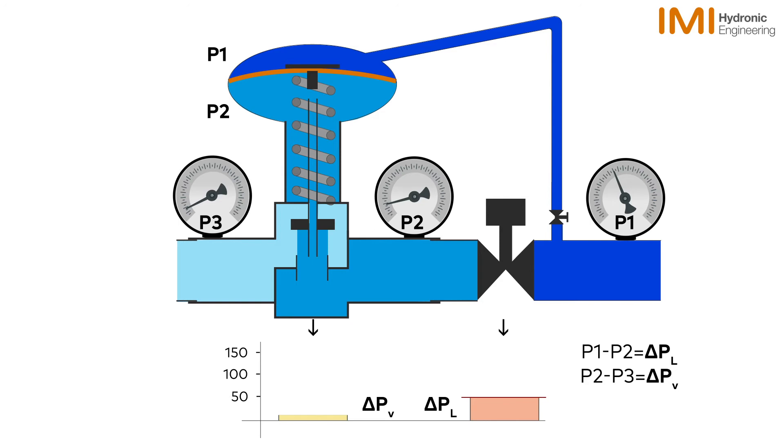As P1 increases, delta PL will initially increase proportionally. The valve then sees this change and acts to close down proportionally, thus decreasing delta PL to set point and increasing delta PV in proportion.